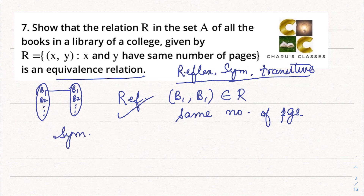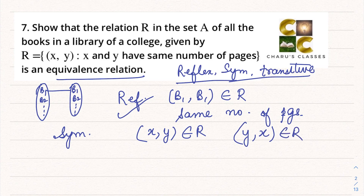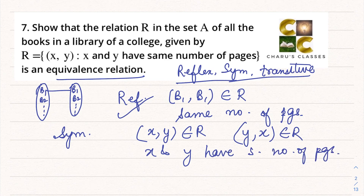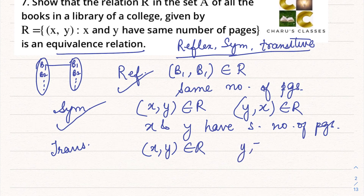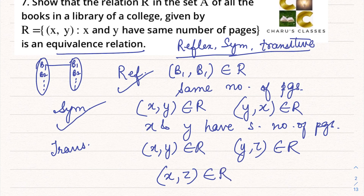Now let's check symmetric. Suppose (x, y) belongs to R, meaning books x and y have the same number of pages. Therefore (y, x) will also belong to R, because x and y have the same number of pages — so it is symmetric. Now let's check transitive with a book z. If (x, y) belongs to R — x and y have same pages — and (y, z) belongs to R — y and z have same pages — then (x, z) will also belong to R, because x and z have equal number of pages. So it is transitive, and since this relation is reflexive, symmetric and transitive, it is an equivalence relation.